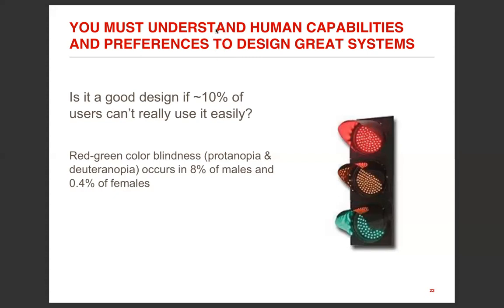You must actually understand human capabilities and preferences to design great systems. Is it a good design if 10% of users can't really use it easily? Whether it's a hardware, a flyer, or a product your company is bringing — if 10% of users can't use it easily, is it a good design?